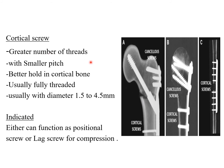The cortical screw has a greater number of threads with smaller pitch, providing better grip in compact cortical bone. It is usually fully threaded and can function as either a positional screw or a lag screw for compression effects.